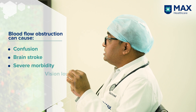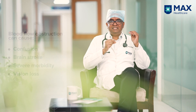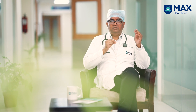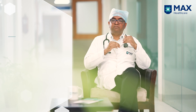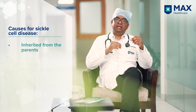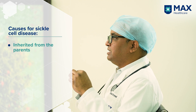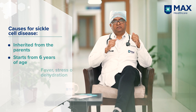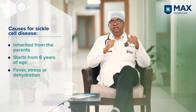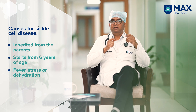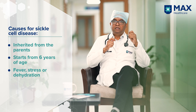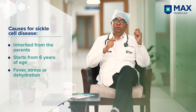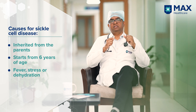It can even cause vision loss. We should know why this sickling happens. This is an inherited disorder and generally it runs within families. A baby generally inherits it from the father or the mother. All the symptoms start from 5 to 6 years of age when adult hemoglobin is formed. Any fever, any stress, or any dehydration can trigger these normal round RBCs to change shape into a crescent shape, thus causing the problem.